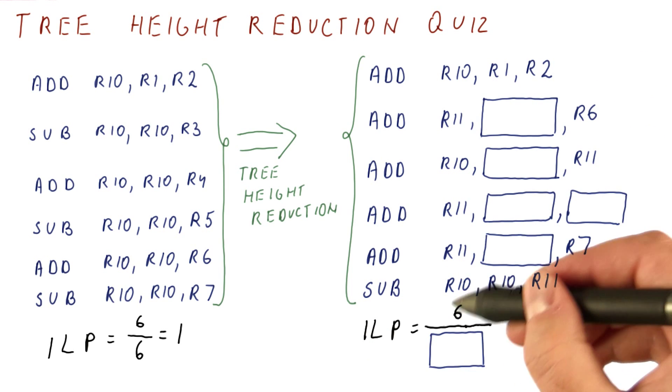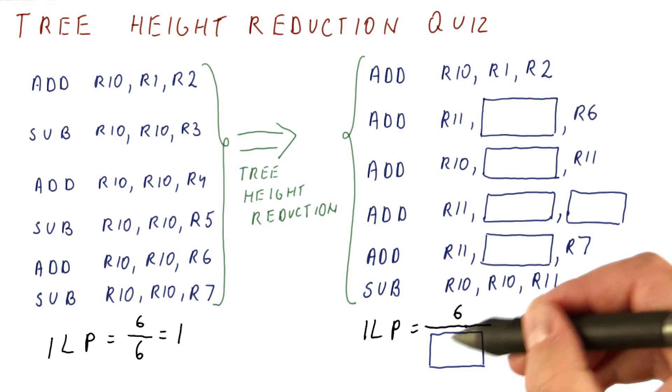what is the ILP? We still have six instructions, how many cycles do we need to do them now?